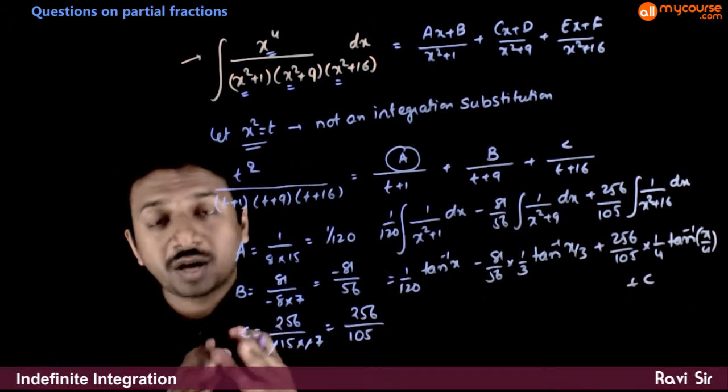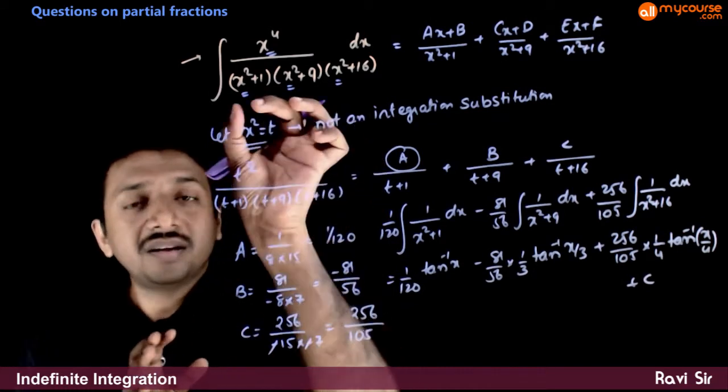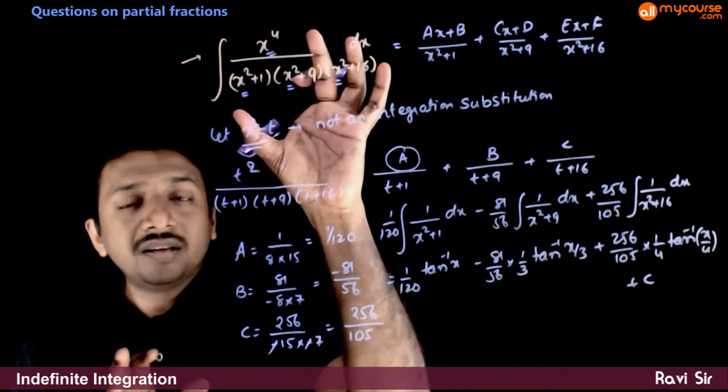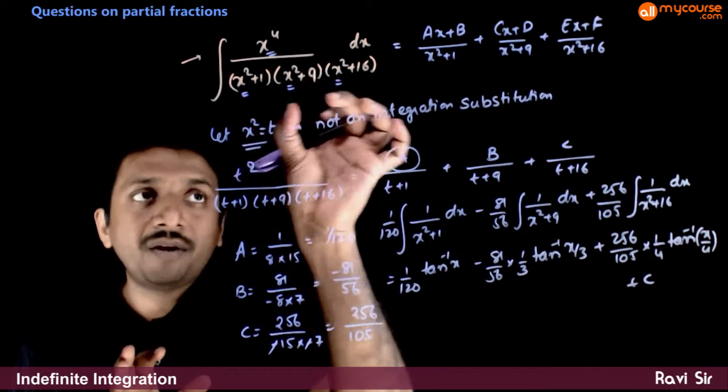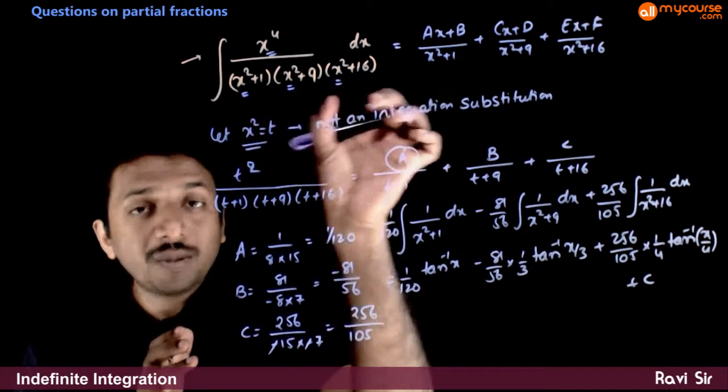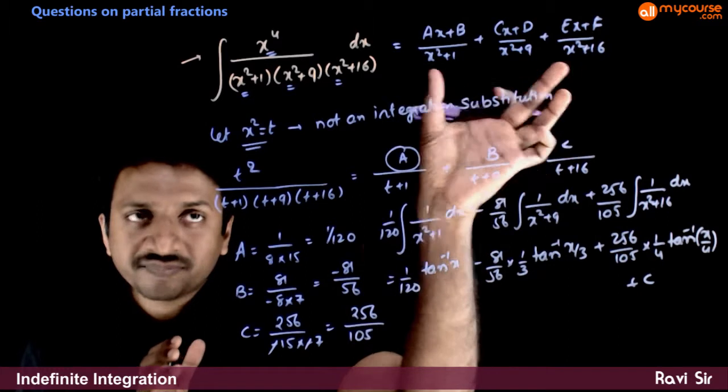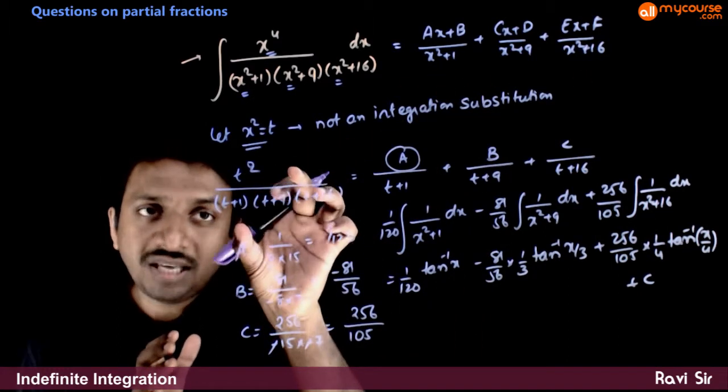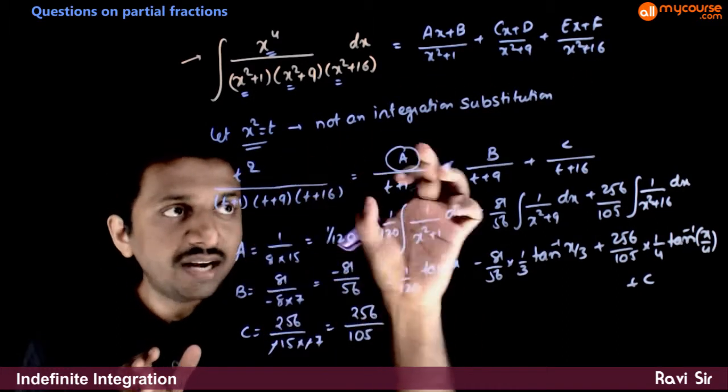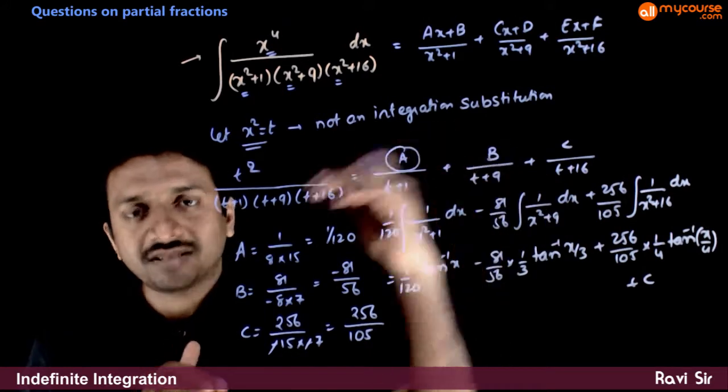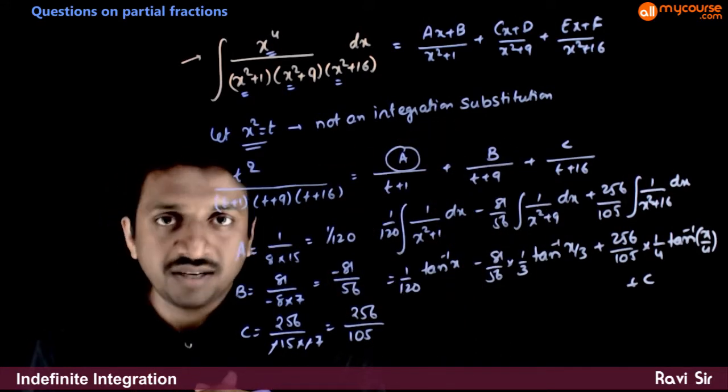Keep this problem in mind whenever in the question you have an expression completely made of x squares. Before doing the partial fractions in this way, take x square is equal to t, simplify the fraction, then do the partial fractions and then back substitute. You get the answer easily.